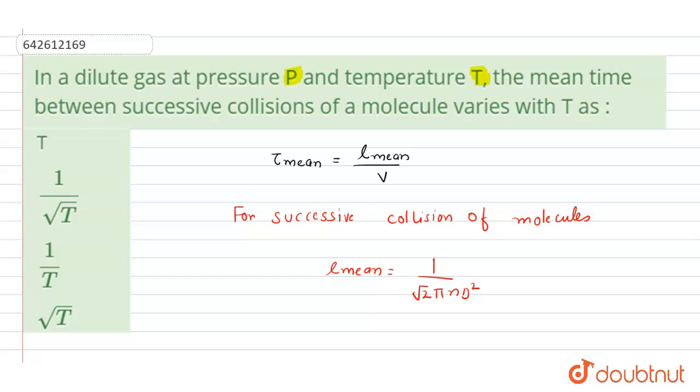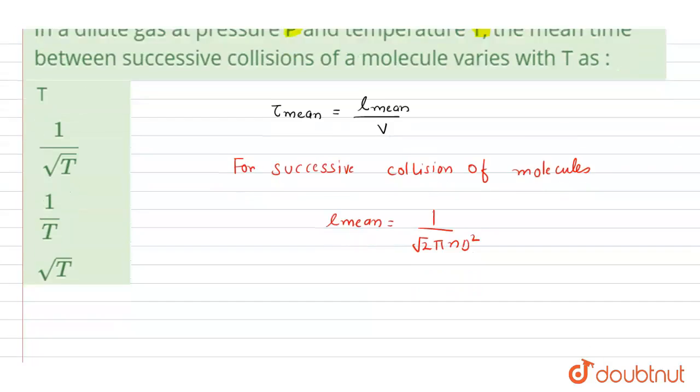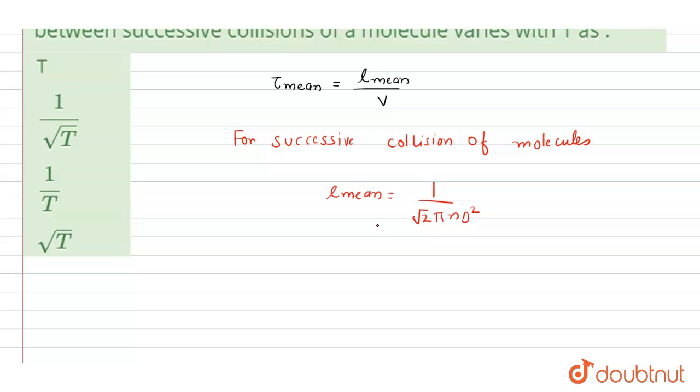Now it is clear, the value will become tau mean where V is velocity. Velocity for successive collision is always directly proportional to square root of temperature. If we increase the temperature then velocity will increase.